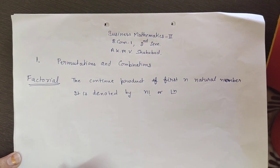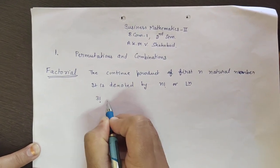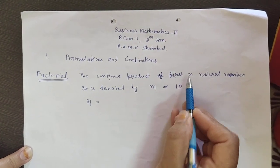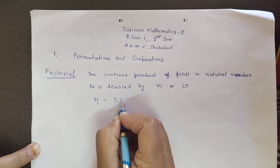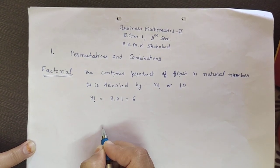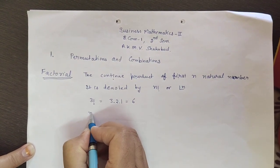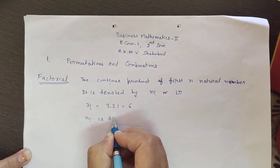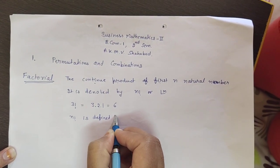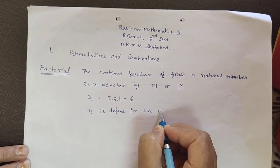Suppose we want to find the factorial of 3. Since it is the continued product of the first n natural numbers, 3 factorial is 3 × 2 × 1, which equals 6. Factorial is defined for positive integers only.